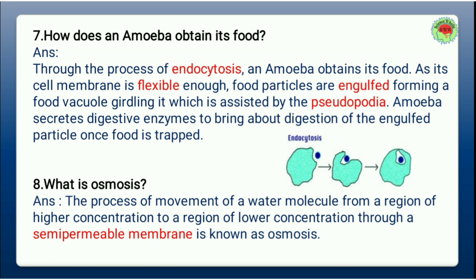Question 7: How does an amoeba obtain its food? The process by which amoeba obtains its food is endocytosis — a process in which food is engulfed. The amoeba's cell membrane is very flexible. It extends pseudopodia — false leg-like and hand-like projections — to engulf food. Digestive enzymes are then released to digest the engulfed food. This process is called endocytosis.